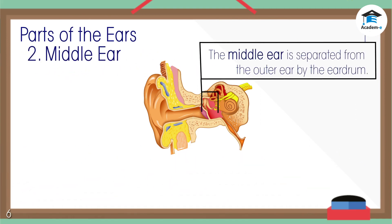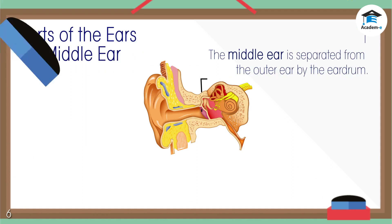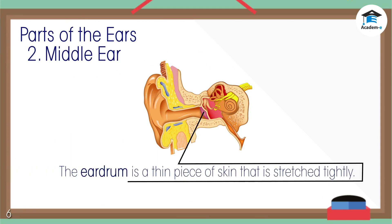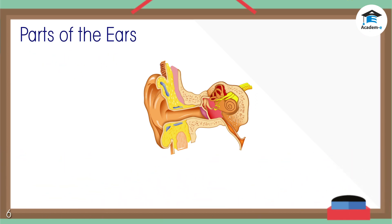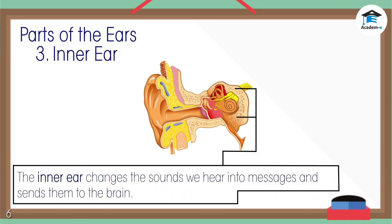The middle ear is separated from the outer ear by the eardrum. The eardrum is a thin piece of skin that is stretched tightly like the top of a drum. The inner ear is the part of the ear that changes the sounds we hear into messages and sends them to the brain.